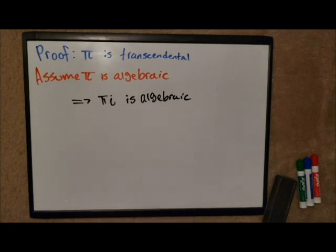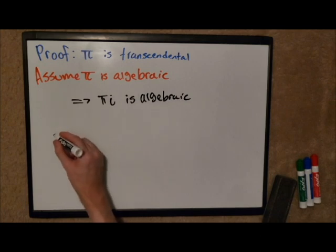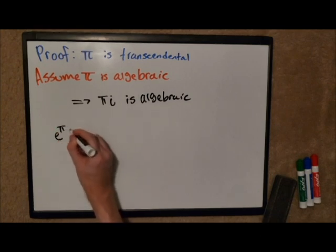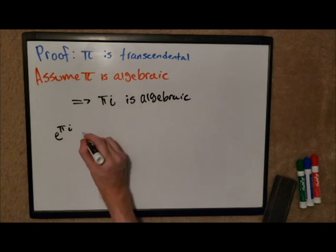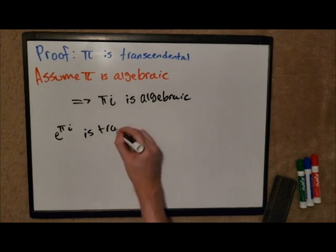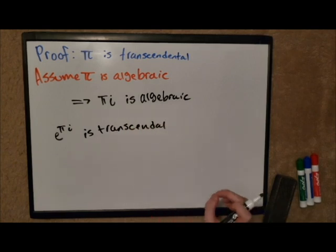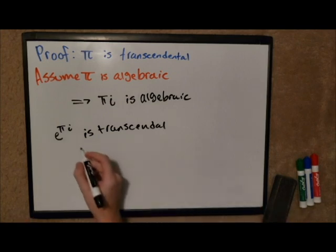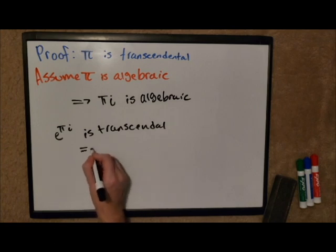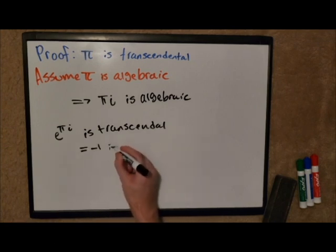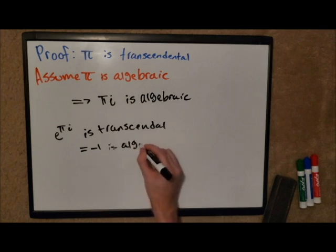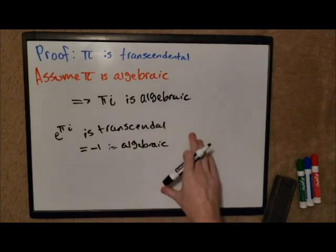So we're going to use the Lindemann-Weierstrass theorem. If we take e to the pi i, then we would expect this to be transcendental. But we know that the Euler identity exists, right?